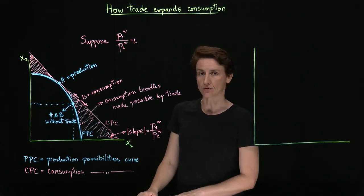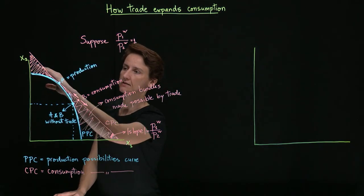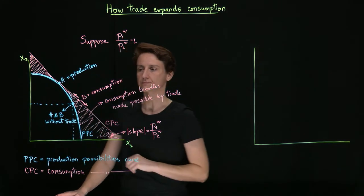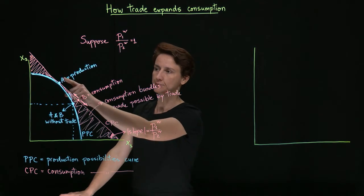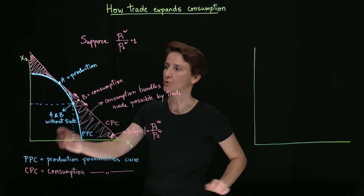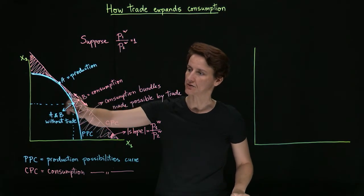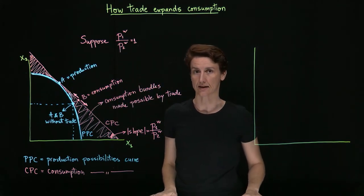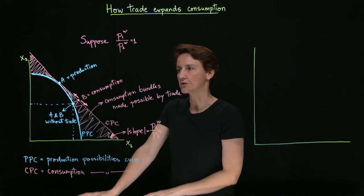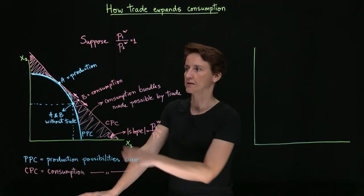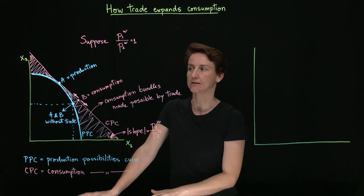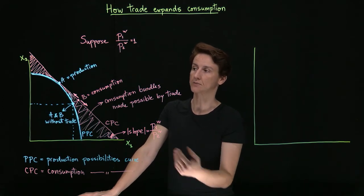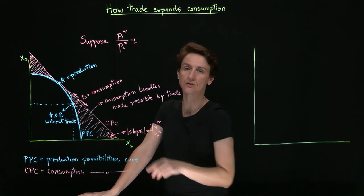After there's access to trade, that has expanded the available options for consumption from this to this. Now production will occur at precisely this point. And that is the point on PPC where it is tangent to the consumption possibilities curve, so where its slope equals the ratio of prices internationally. So the point of production now will depend only on the production capabilities and international prices. It no longer depends on preferences anymore. Preferences will determine where on this line the country consumes.